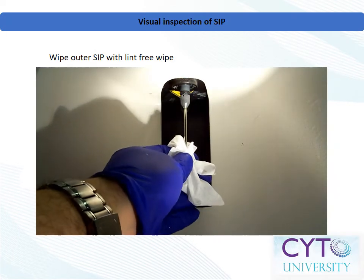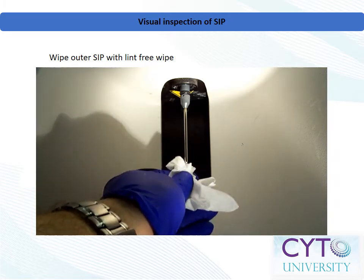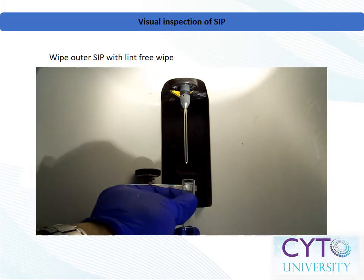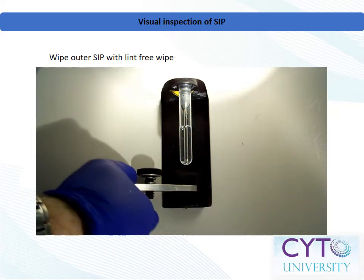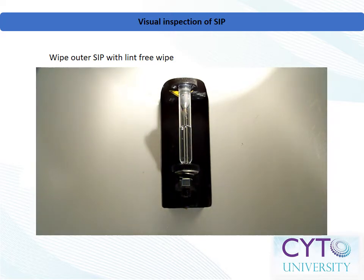Once you have verified that the cytometer presents as all systems normal, the next place to look for an easy unclogging solution is to visually inspect the sample injection port. Some systems have a rigid metal tube which interacts with the sample, while others use plastic. The sample injection port for many systems includes an outer and inner tube, where the outer tube has a cross-shaped opening that can sometimes trap larger aggregates of cells before they enter into the inner tube. This outer tube can easily be cleared by wiping with a lint-free absorbent wipe.